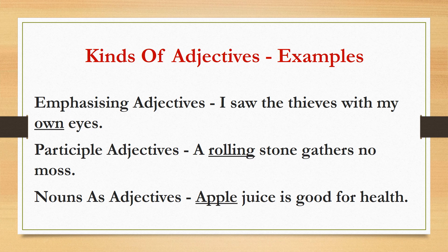Participle adjectives look like verbs but they are really adjectives. Their function is to describe nouns. Example: A rolling stone gathers no moss. The participle adjective rolling qualifies the noun stone. Nouns also function as adjectives when they precede the noun they modify. Example: Apple juice is good for health. In this sentence, the noun apple precedes the noun juice and is used as an adjective.